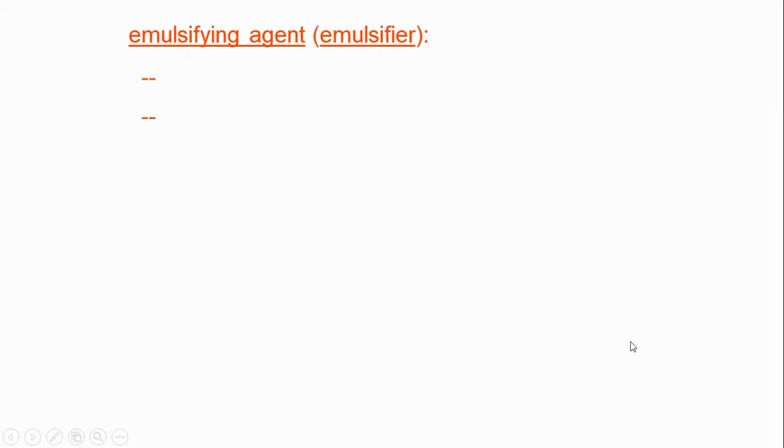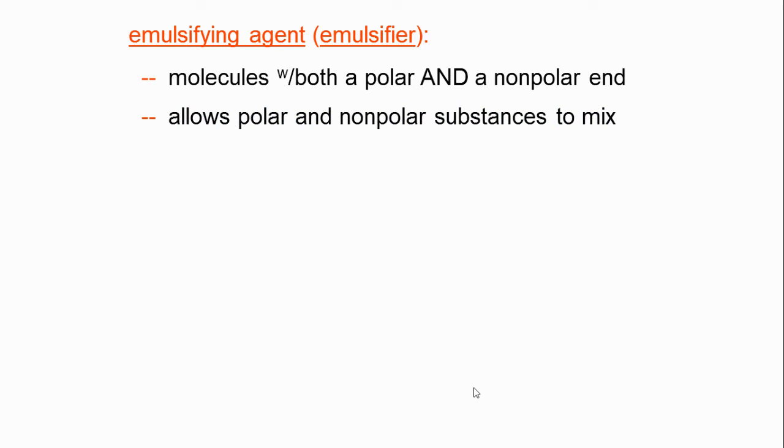Let's now talk about how we can get polar and non-polar things to mix. Perhaps you remember from your soap article, an emulsifier or emulsifying agent will do that. What is an emulsifying agent? It's a molecule that has both a polar and a non-polar end on it. It allows the polar end of the molecule to interact with a polar substance and the non-polar end to interact with the other substance.